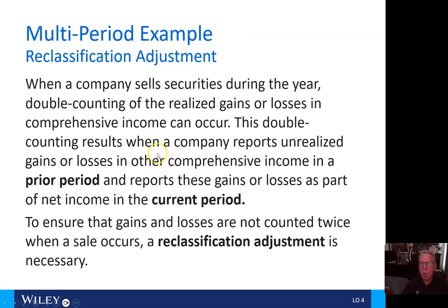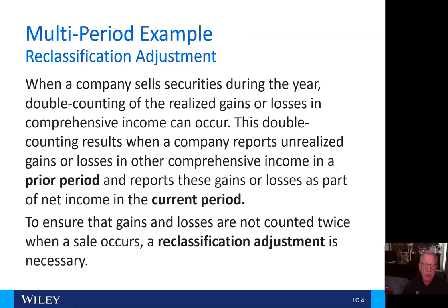So what do we do with a multi-period example? When a company sells securities during the year, double counting of realized gains or losses in comprehensive income can occur. This double counting results when a company reports unrealized gains or losses in other comprehensive income in a prior period and then reports these gains or losses as part of net income in the current period. To ensure gains and losses are not counted twice when a sale occurs, a reclassification adjustment is necessary.